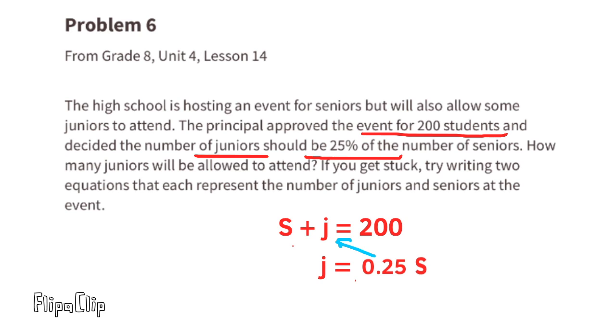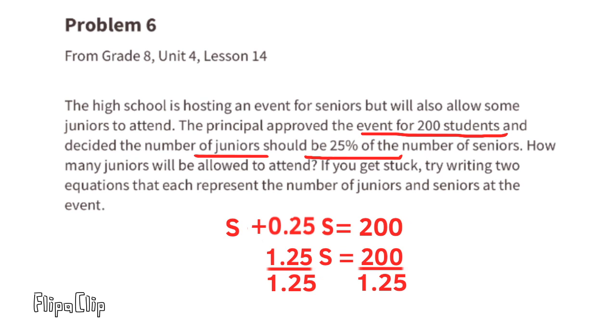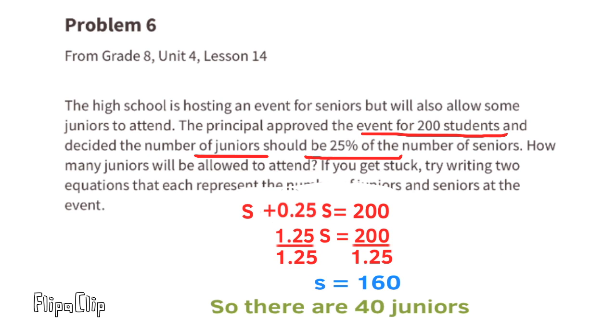Now the equation reads S plus 0.25 S equals 200. That's the same as 1 S plus 0.25 S equals 200. That is 1.25 S equals 200. Solve for S by dividing both sides by 1.25. S equals 160. 200 minus 160 equals 40. There are 40 juniors going to the dance.